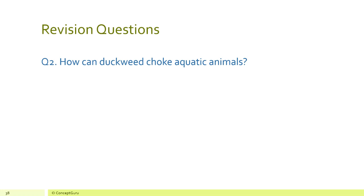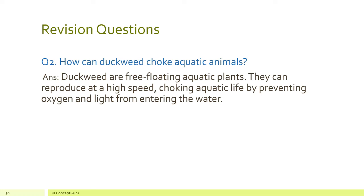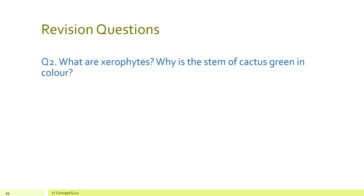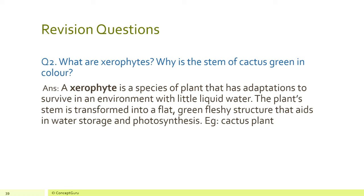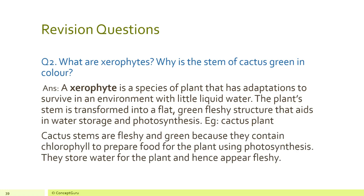How can duckweed choke aquatic animals? Duckweed are free-floating aquatic plants that can reproduce at a very high speed, choking aquatic life by preventing oxygen and light from entering the water. What are xerophytes, and why is the stem of a cactus green? A xerophyte is a species of plant that has adaptations to survive in an environment with little liquid water; the stem is transformed into a flat, green, fleshy structure that aids in water storage and photosynthesis. The cactus stem is green because it contains chlorophyll to prepare food, and it stores water, hence appearing fleshy.